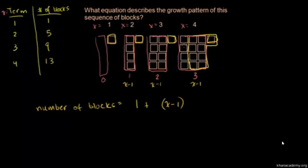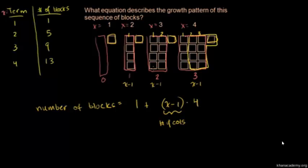So x minus 1 tells us the number of columns we have. Here we have three columns, here two columns, here one column, here zero columns — it even works for the first term. And in every one of these columns, we have four blocks. So the number of blocks is 1 plus (x minus 1) times 4. That is the equation that describes the growth pattern.